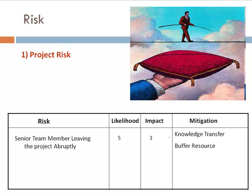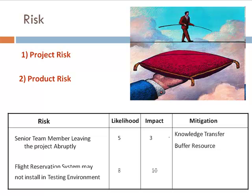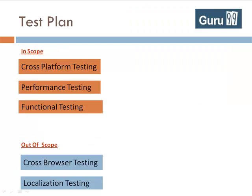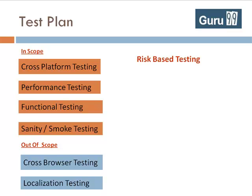The second type of risks are product risks. An example of a product risk would be the flight reservation system not installing in a test environment. Mitigation in this case would be conducting a smoke or sanity testing. Accordingly, you will make changes in your scope items to include sanity testing. This is a risk-based strategy of testing.